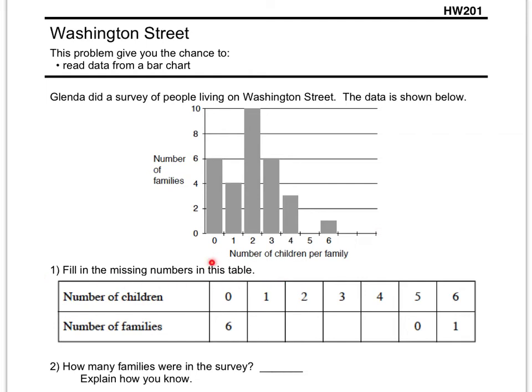Number one says fill in the missing numbers on this table. So how many families have one child? Well, six families have zero children. And you can tell because this is the number of children per family, and there's six families that have zero children. Here we have families that have one child, and they go up to this number here. So you're going to fill in that number there.